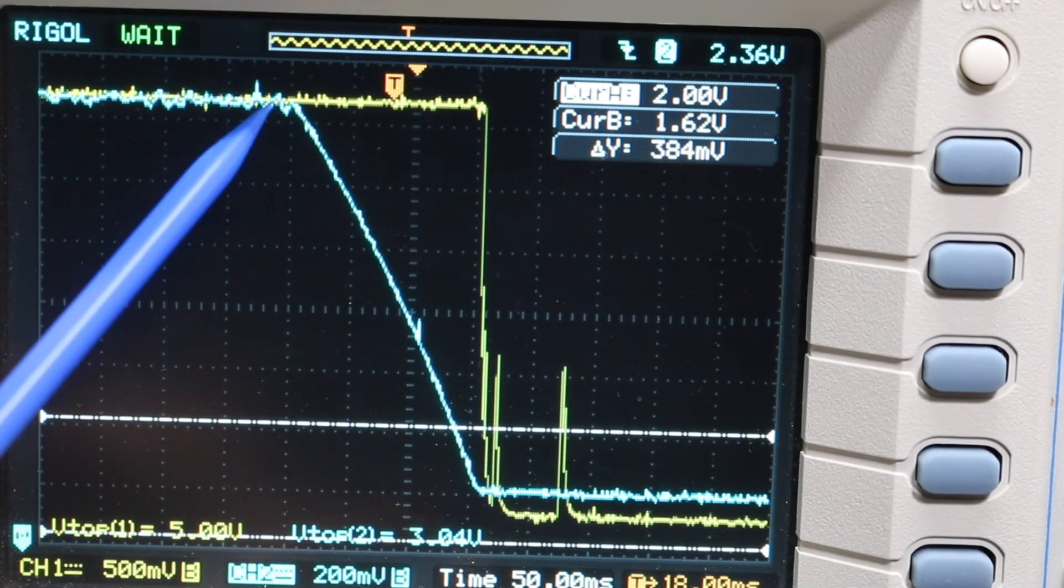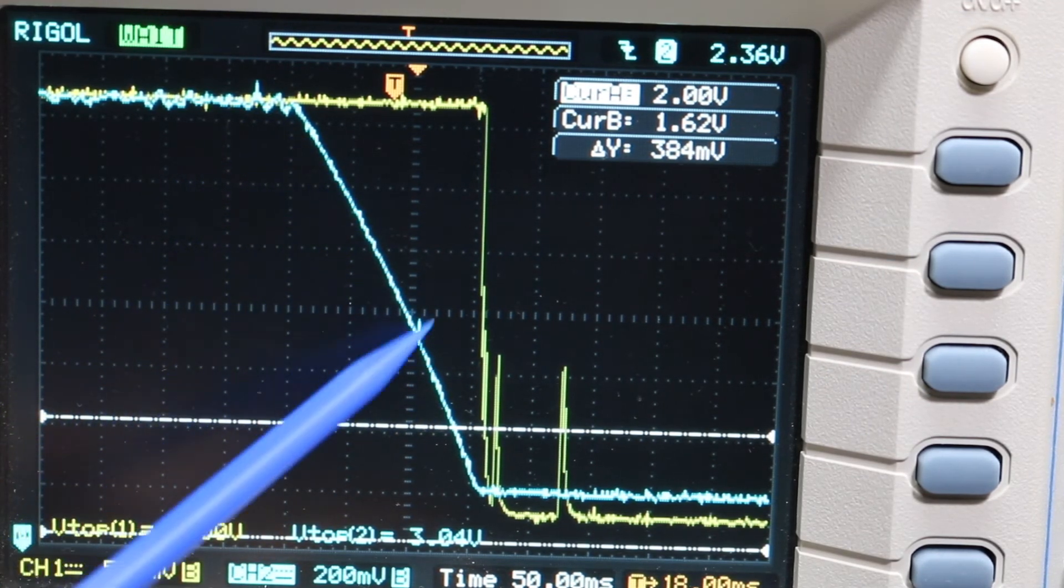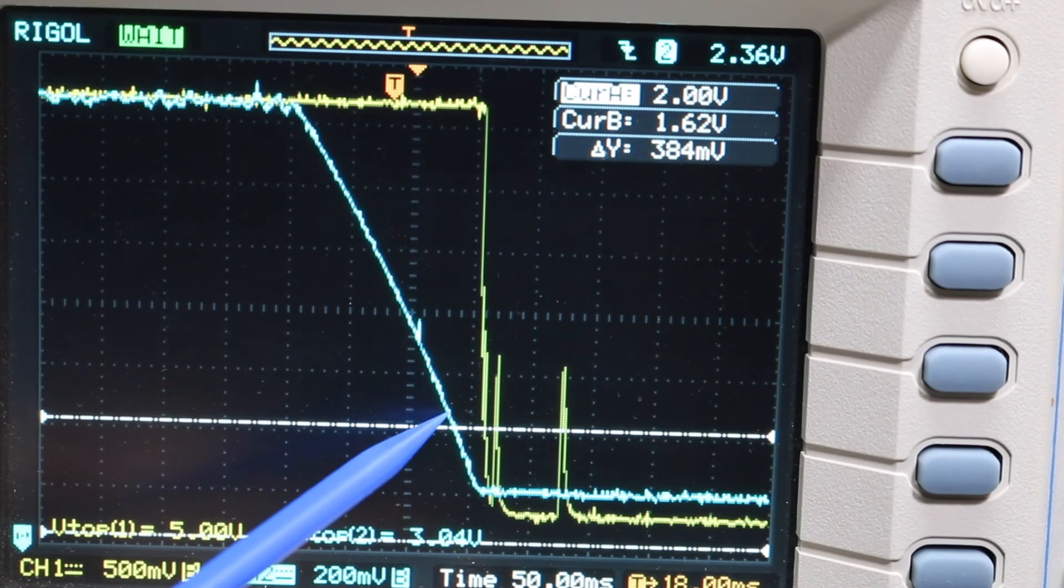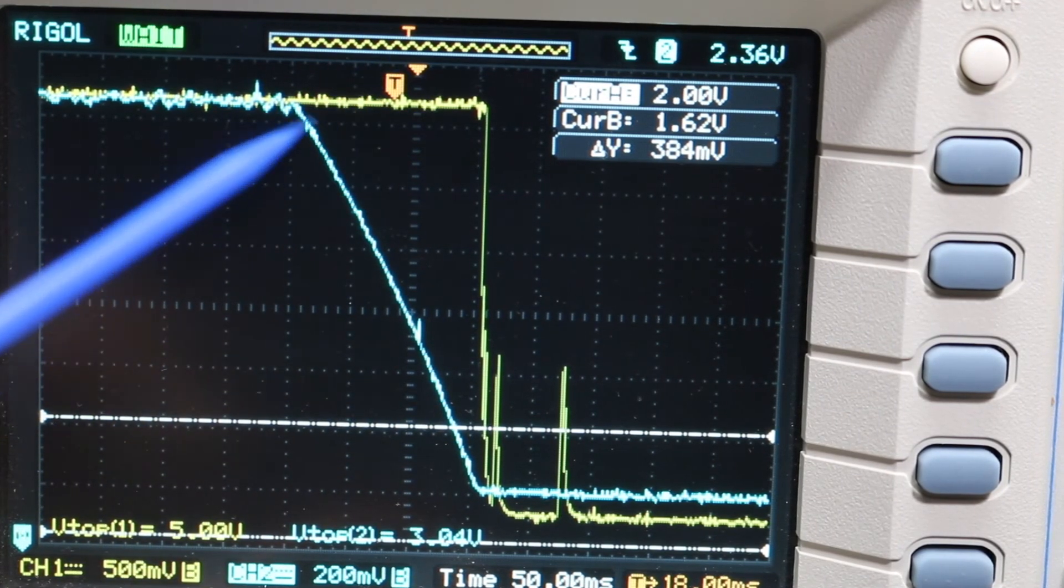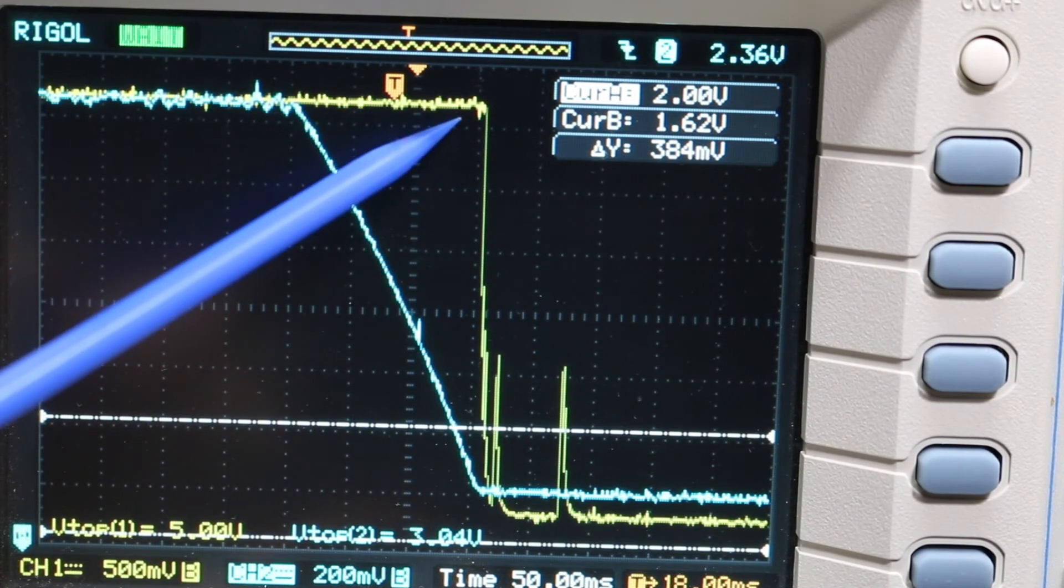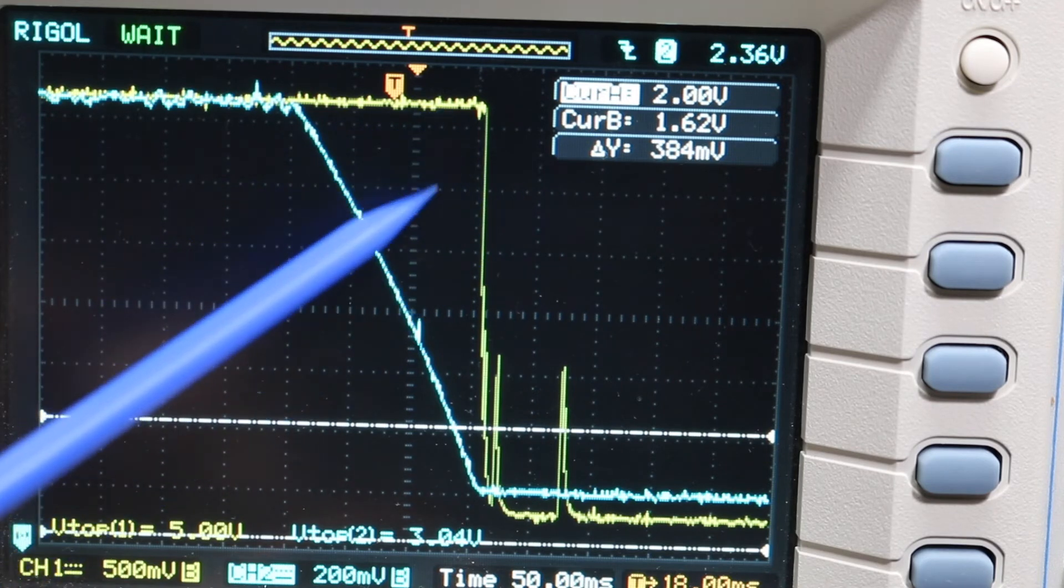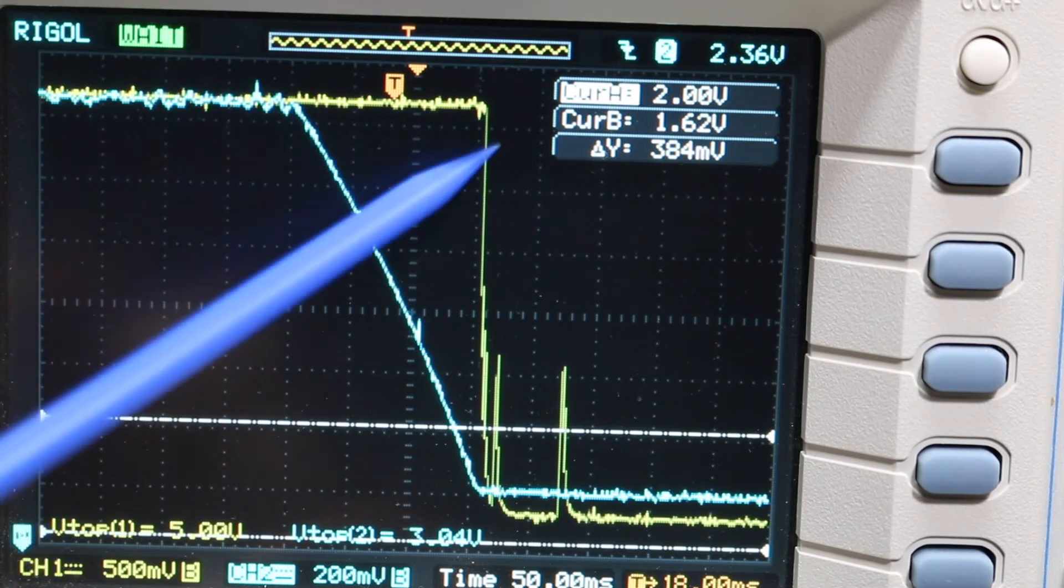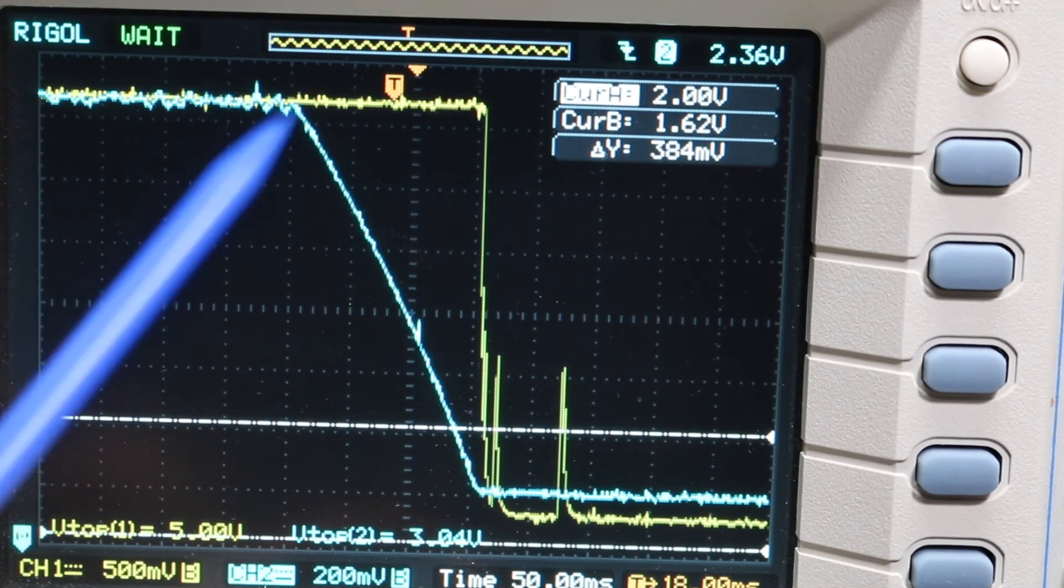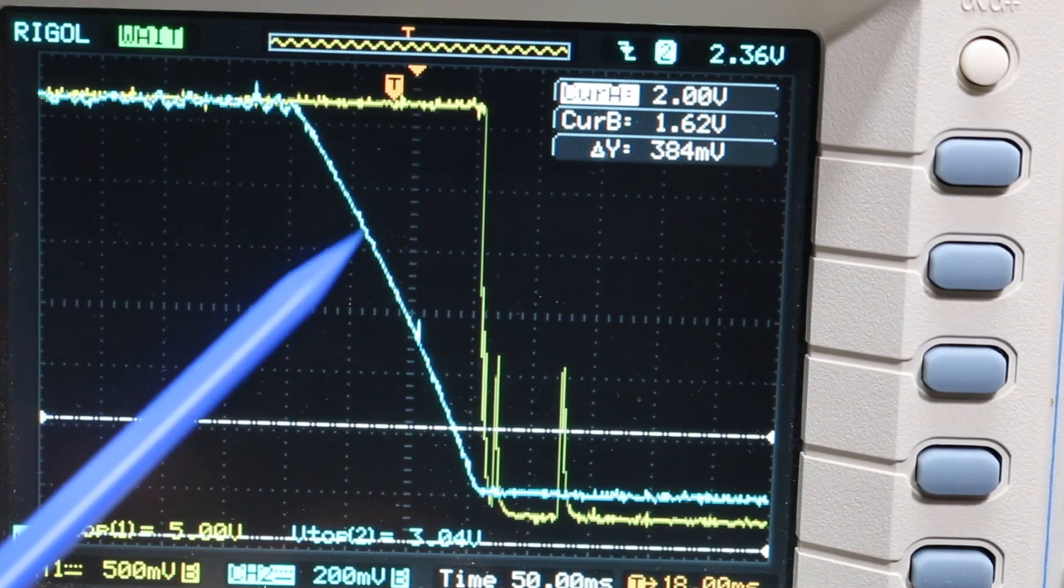So this means if our input supply disappears for less than 140 milliseconds and then it can come back, we should have a solid output 5 volt supply at the power we calculated we need to deliver. So I'm going to try to quickly remove power and give it back and just observe.